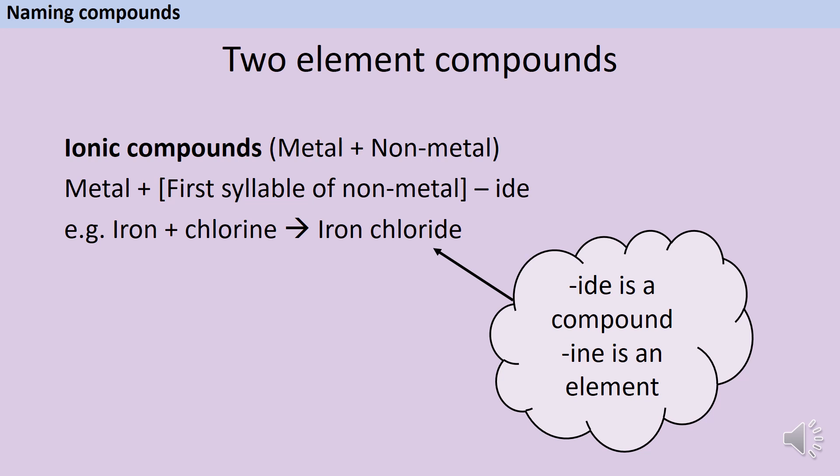To name the ionic compound, you first take the name of the metal, and you don't need to change anything at all. That word is just the first word of the ionic compound name. For the second word, you take the first syllable, the first sound in the non-metal element, and then you put the letters IDE on the end. So for instance, if iron reacts with chlorine, it makes iron chloride. Now watch out for that D. It's important that where we see IDE, that represents a compound, whereas the element is INE.